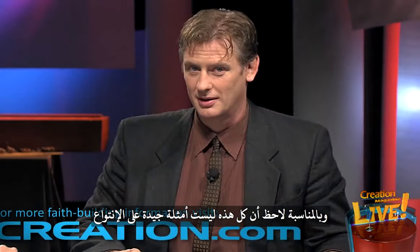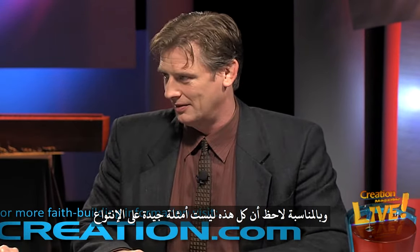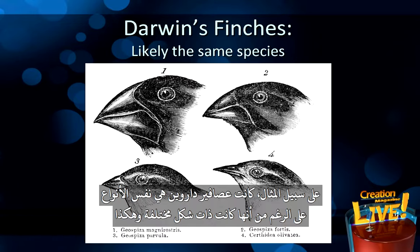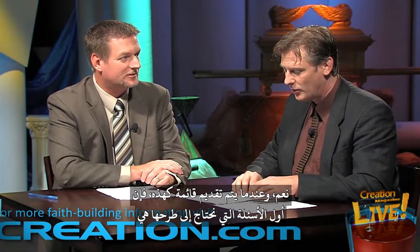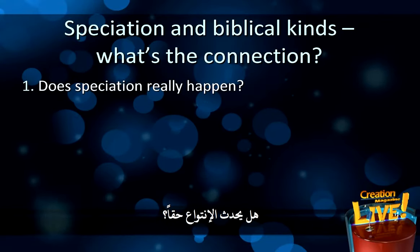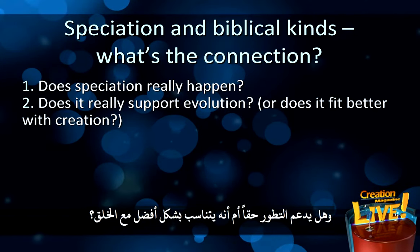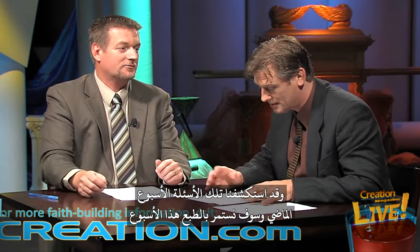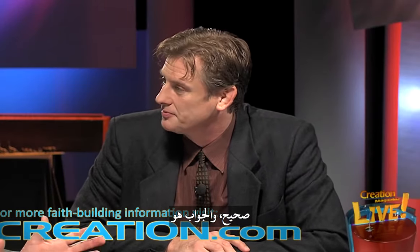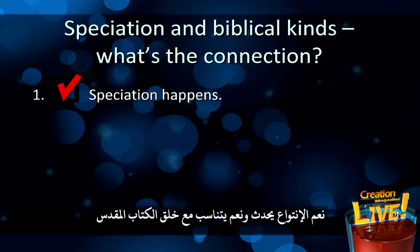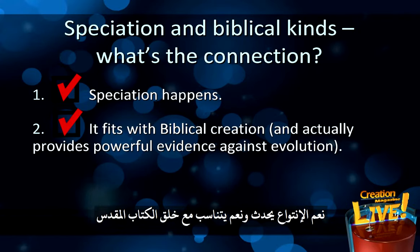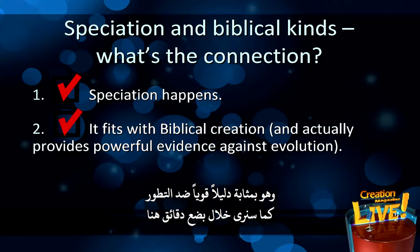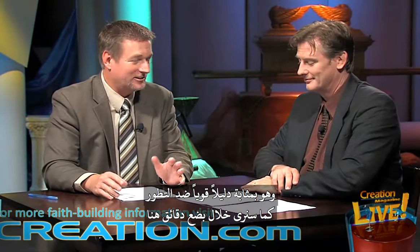Notice that not all of these are good examples of speciation. For example, Darwin's finches were probably the same species even though they had different looks. When presented with a list like this, the first things we need to ask are: does speciation really happen, and does it really support evolution, or does it fit better with creation? The answer is yes, speciation happens, and yes it fits with biblical creation — and it actually provides powerful evidence against evolution.